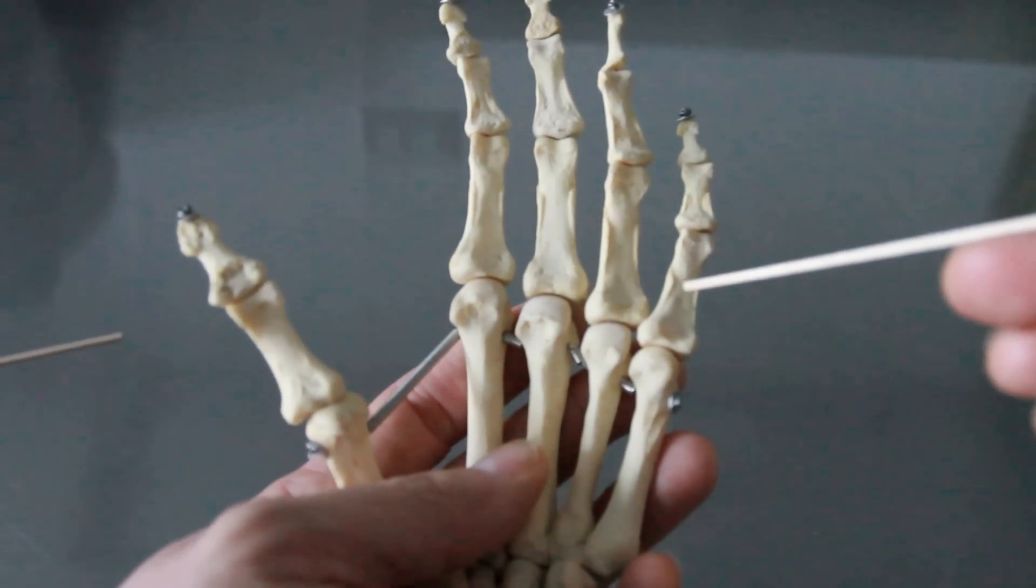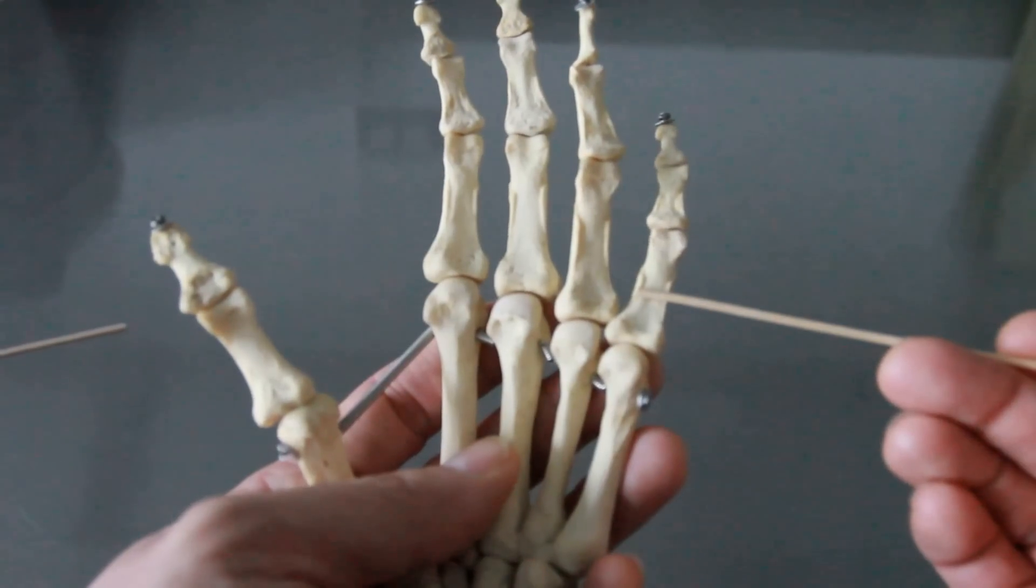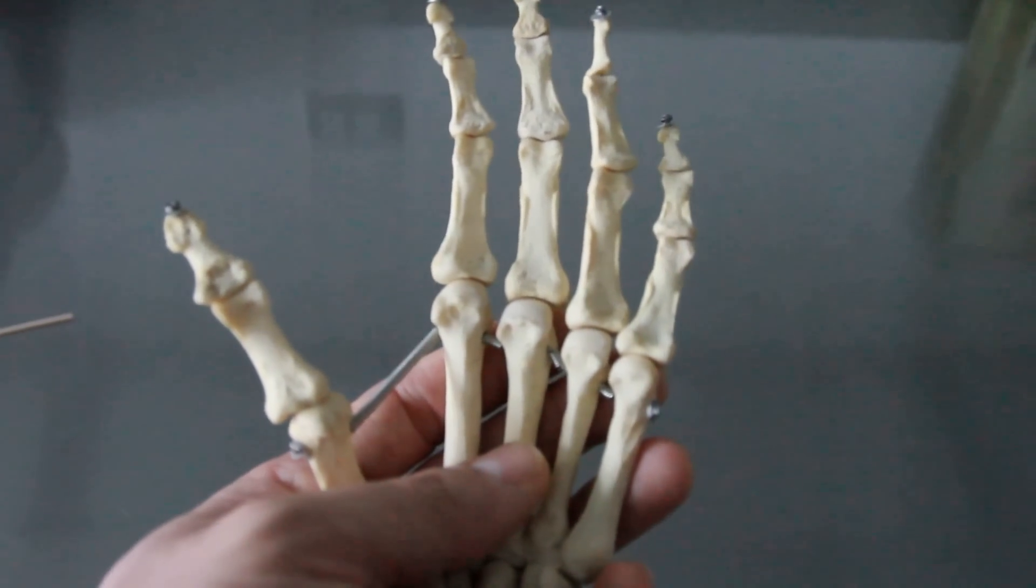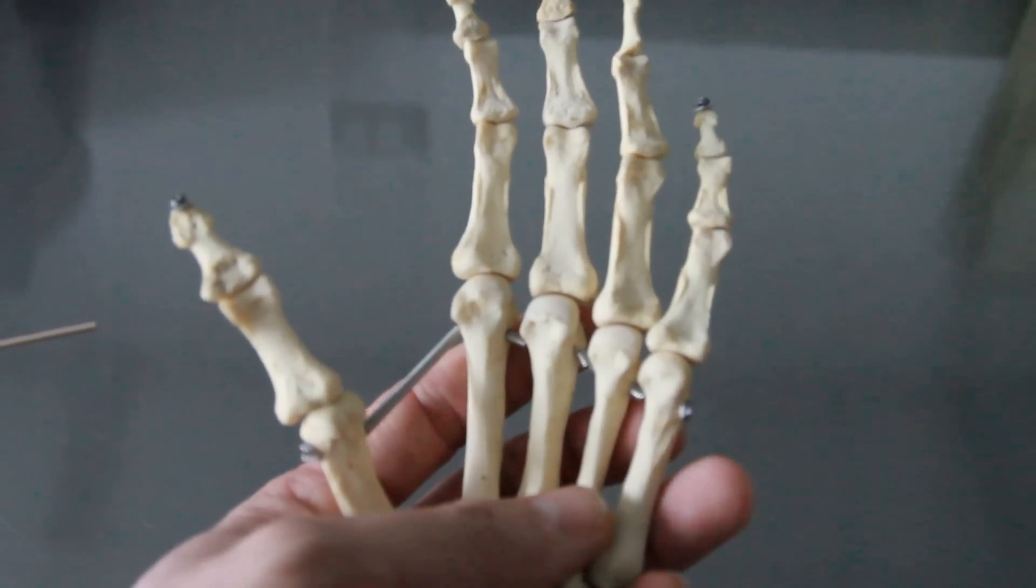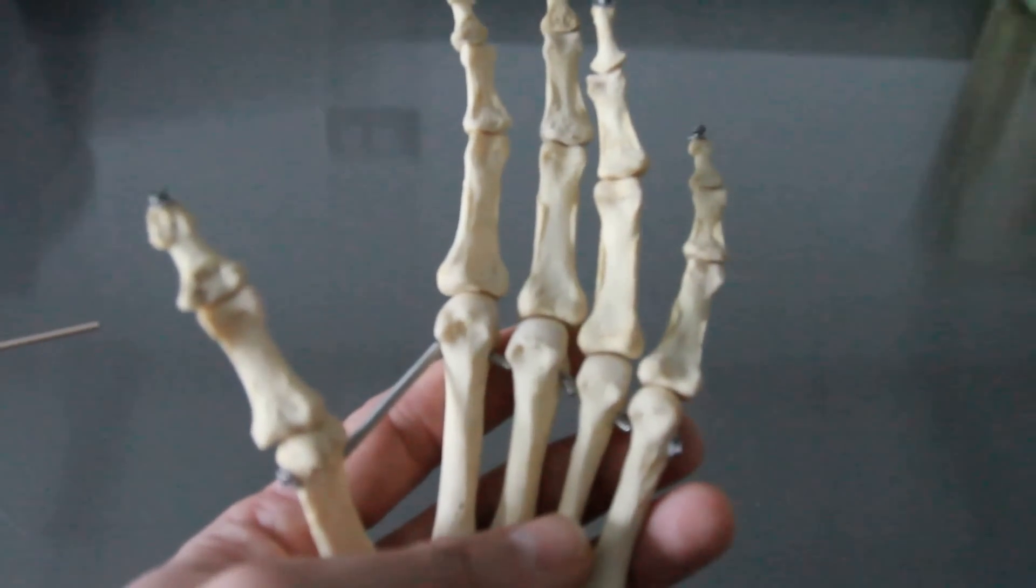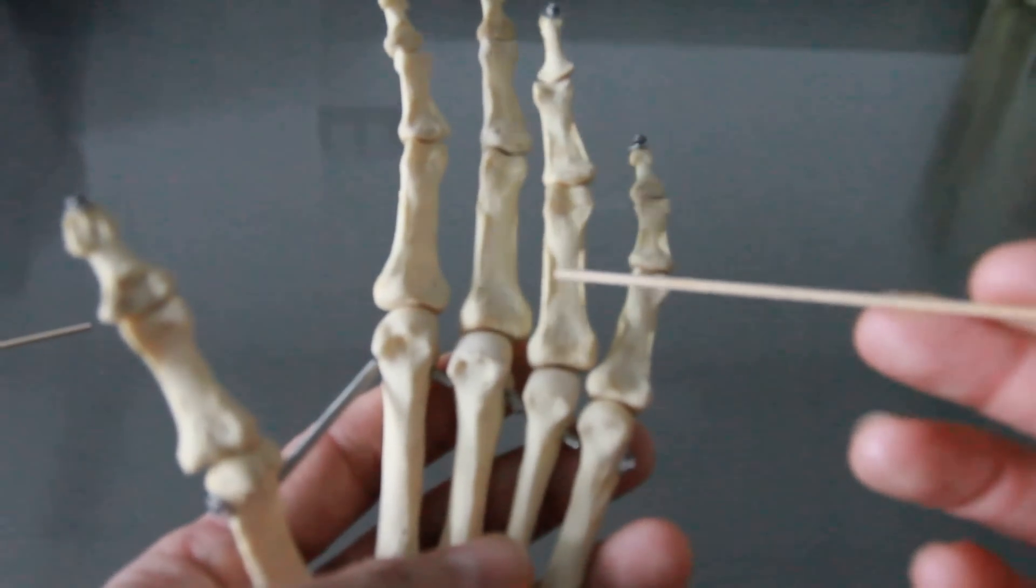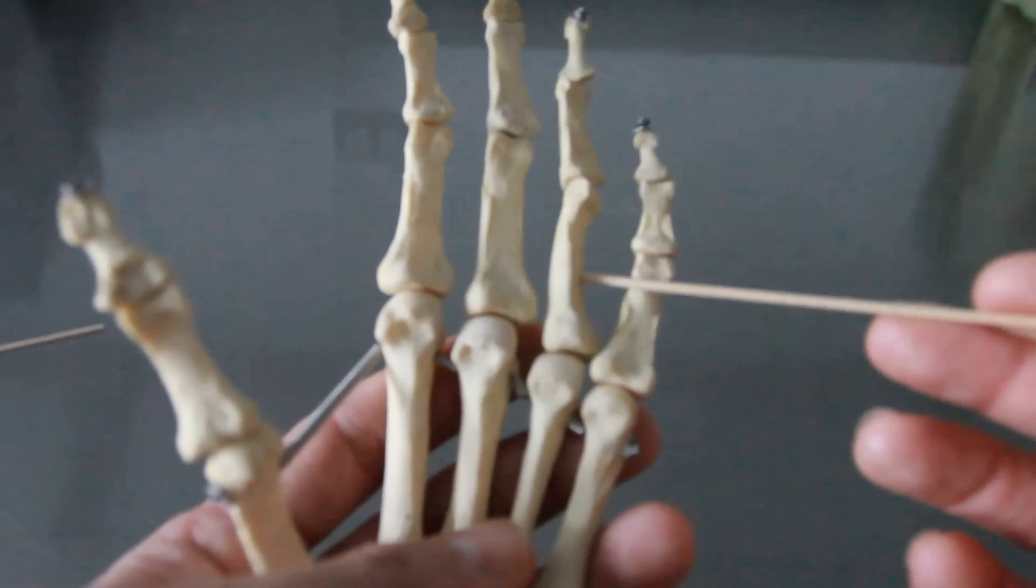So left, proximal, and then the name is phalanx or phalange. Either one, both of them are called the same. That's the name of the bone. So when you say, what kind of bone is any of these? Phalanx or phalanges. So left proximal phalanx.